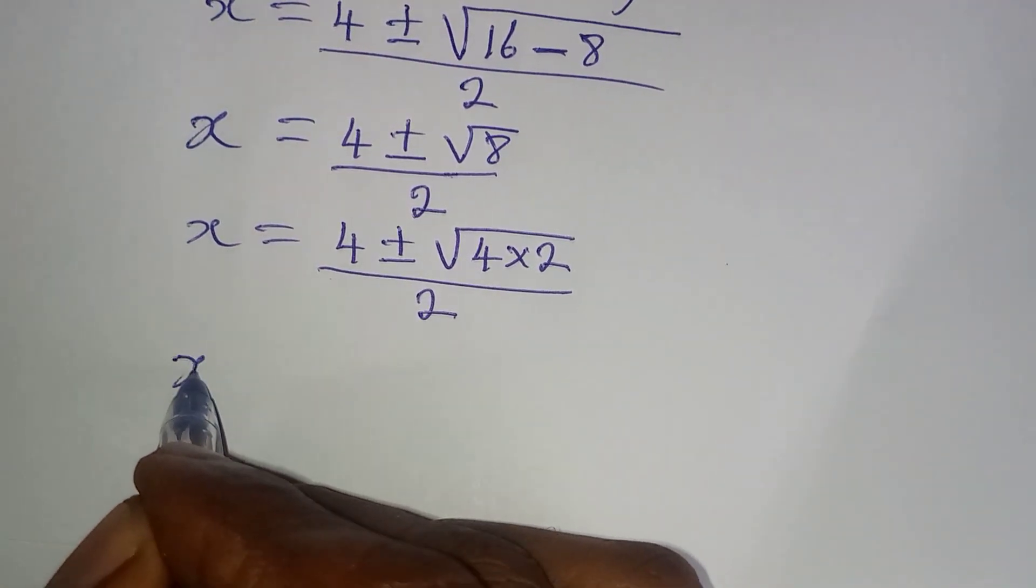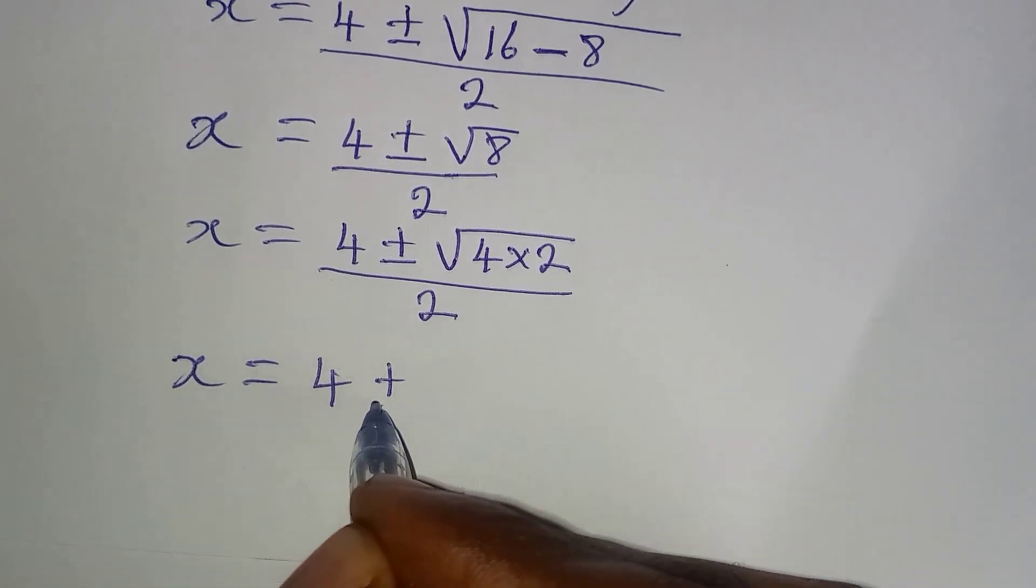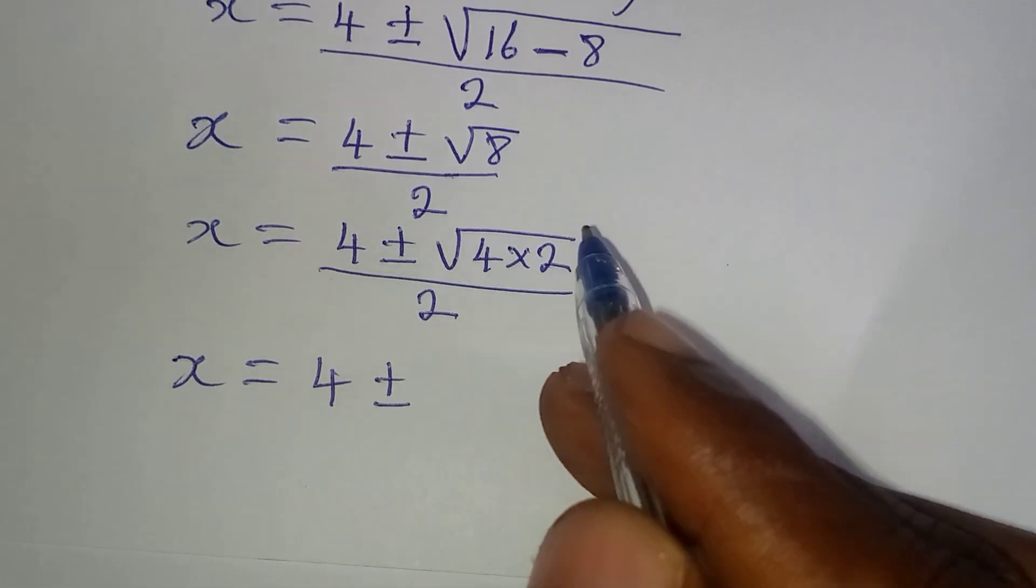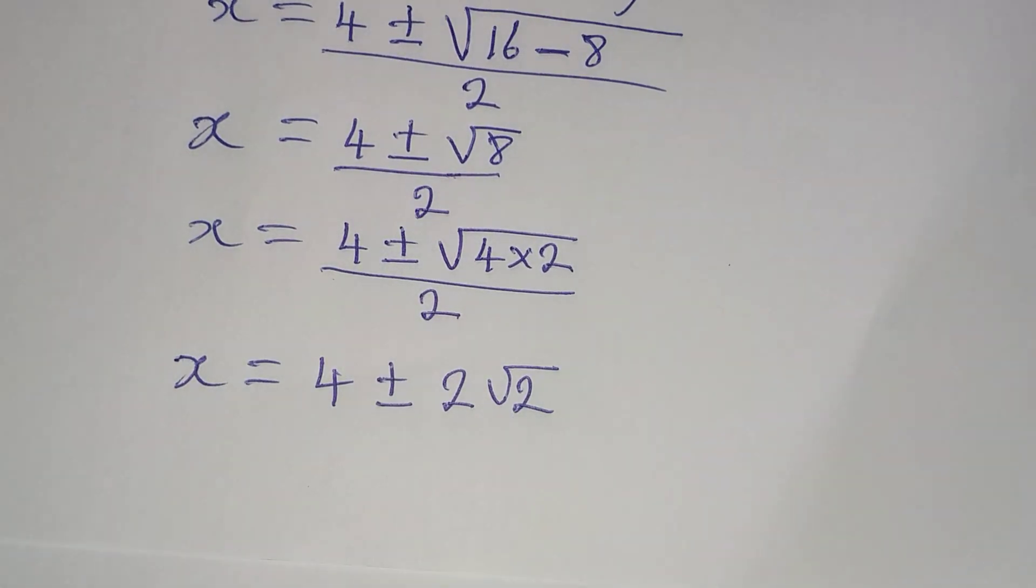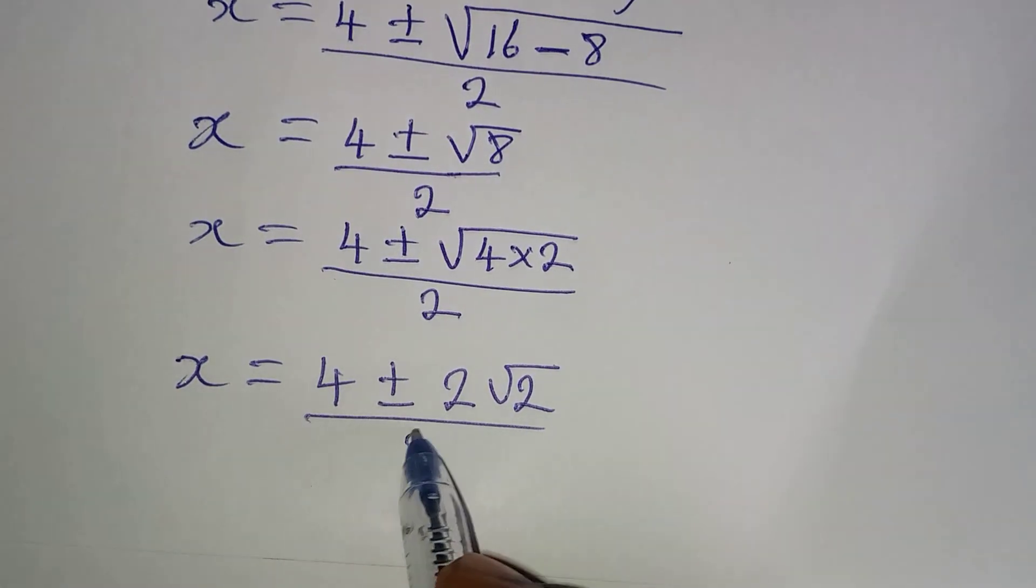And now x will be equal to 4, positive or negative. Square root of 4 is 2. Then the 2 in the square root sign will appear. This is now over 2.